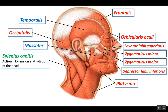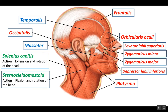The first one is called the splenius capitis, and the next one is called the sternocleidomastoid. These two are often learned together because they have similarities in that when you rotate your head right to left, they work together to do that. They also can be considered antagonists of one another because when both of your sternocleidomastoid muscles contract, your head and neck flexes, whereas when your splenius capitis muscles contract, your head and neck extend.